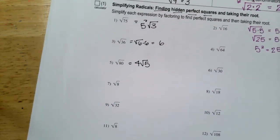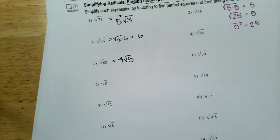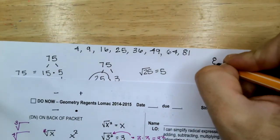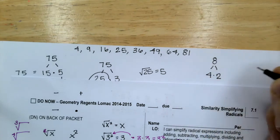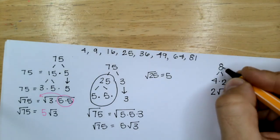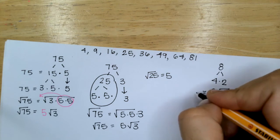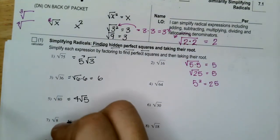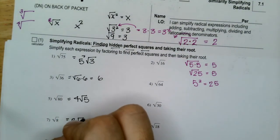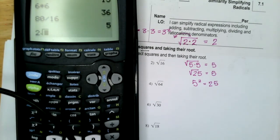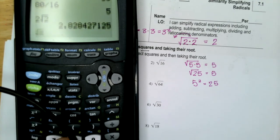For the square root of 8: 4 is a perfect square factor of 8, so 8 becomes 4 times 2. Since 4 is 2 squared, the square root of 8 is 2 times the square root of 2. You can verify with a calculator: 2 times the square root of 2 equals the square root of 8.